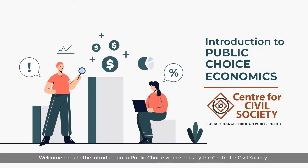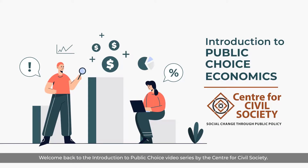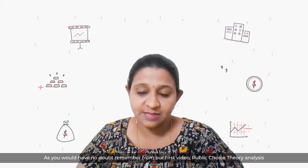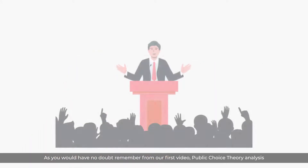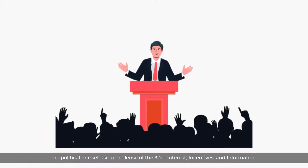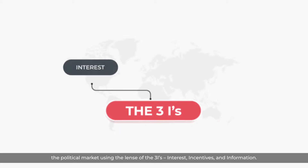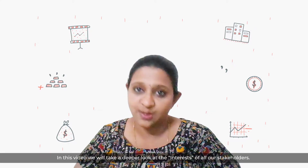Welcome back to the introduction to the public choice video series by the Center for Civil Society. As you would remember from our first video, public choice theory analyzes the political market using the lens of the three eyes: interests, incentives, and information. In this video, we will take a deeper look at the interests of all the stakeholders.